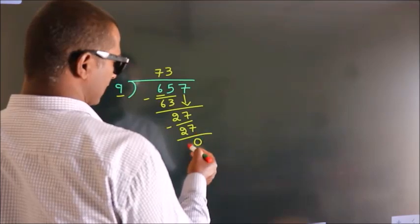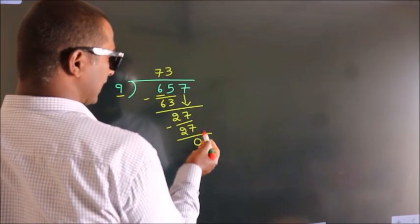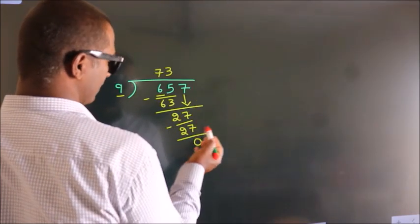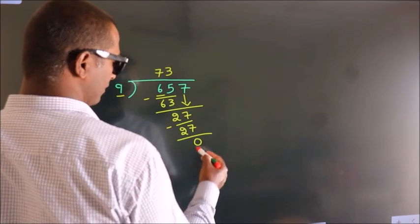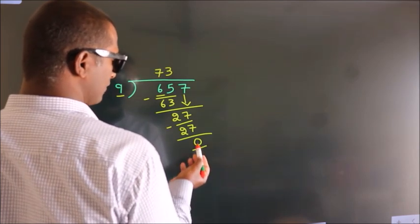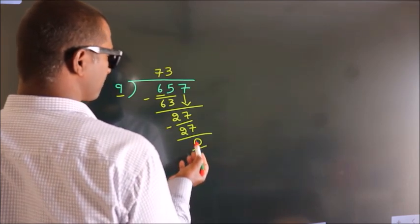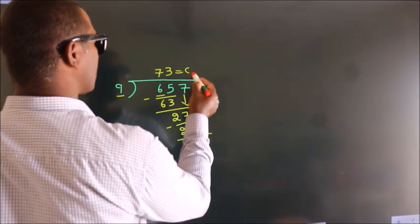After this, there are no more numbers to bring down, and we got remainder 0. So this is our quotient.